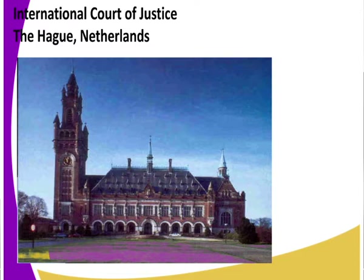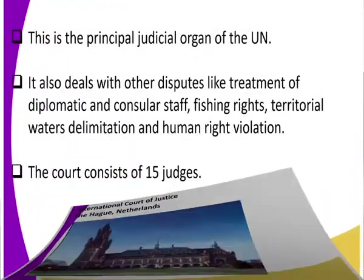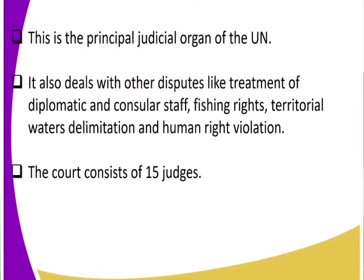Now, who heads the Hague, and what does it comprise of? The Hague is the principal judicial organ of the UN. It deals with disputes such as the treatment of diplomatic and consular staff, fishing rights, territorial water delimitation, and human rights violations. The majority of cases taken to the Hague involve human rights violations. Recently, the UN also sent the Security Council to Uganda to assess whether the situation is threatening international peace.